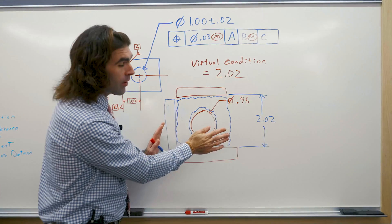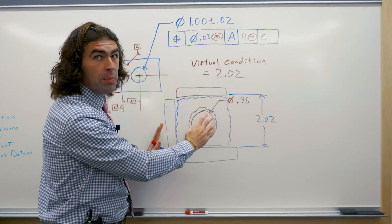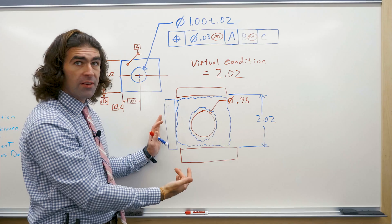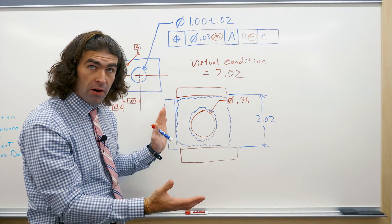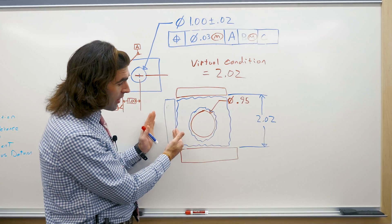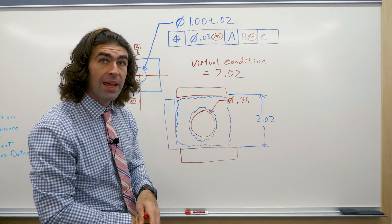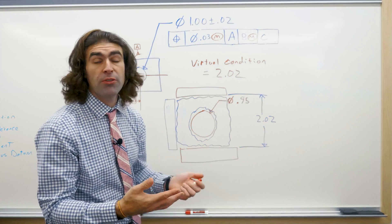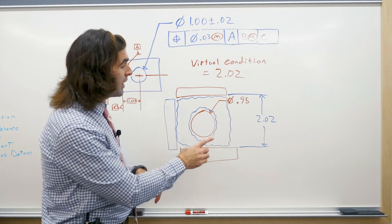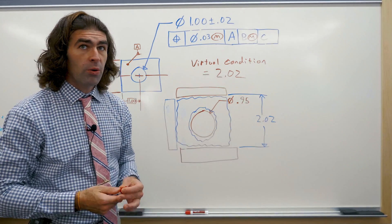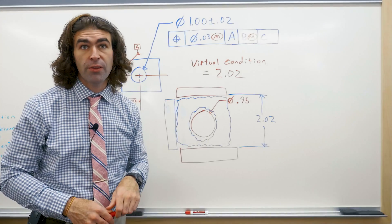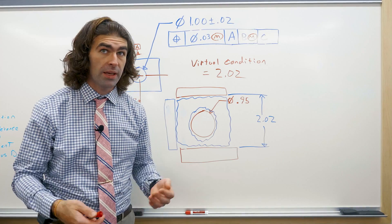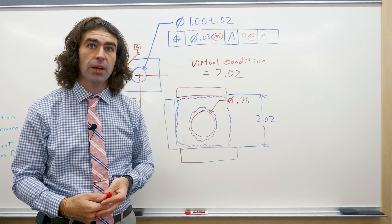So again you put it down on datum A, slide it over the pin, move it over to datum C, and from there as long as it's one point on datum C, three points on datum A, the part is free to rattle around and you can make any measurements you need from there. If it slides over this pin though you know it's already met this tolerance as long as the hole doesn't come in too big which is just a caliper check.